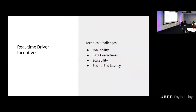The incentive system has a lot of technical challenges. First is availability — the driver incentive system has to have four-nines availability, meaning you can be down less than five minutes per month. We also need to ensure data correctness: no data loss and no data duplication. Data loss means we miss some payment to a driver; data duplication means we make repetitive payments. We also need to tackle scalability, because during big events like New Year's or the Super Bowl, volume can jump several times, and that's exactly when demand is highest. End-to-end latency is also critical — we guarantee P99 is less than 10 seconds.